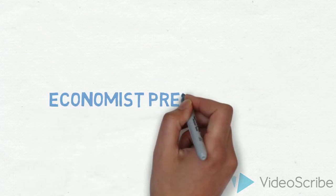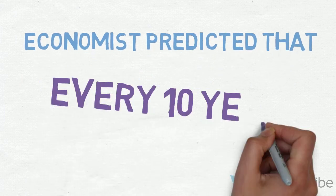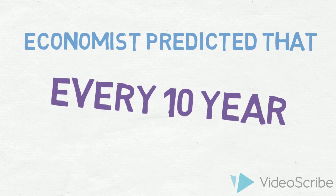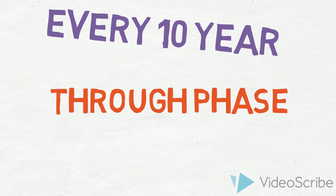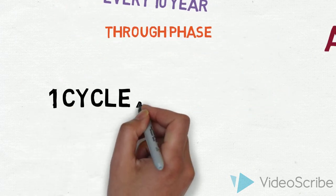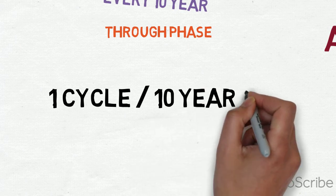Now let's see. Economists predicted that every 10 years, the economy will experience a downturn. How to explain this? One cycle over 10 years equals 0.1.